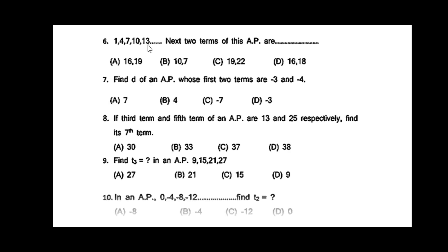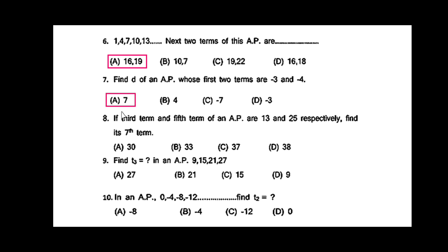For the AP 1, 4, 7, 10, 13, and so on, the next two terms are: the common difference is 3 and the first term is 1, so the next two terms will be 16 and 19. The series goes on increasing by 3. Find D of an AP whose first two terms are -3 and 4: D = 7. If the third and fifth terms of an AP are 13 and 25, the seventh term is 37.